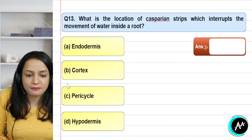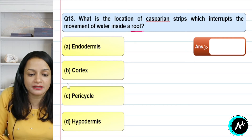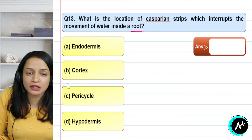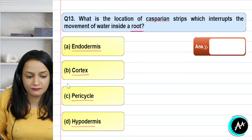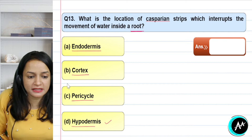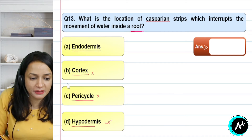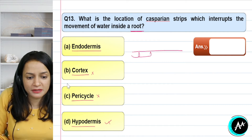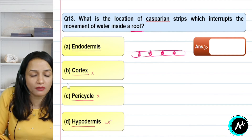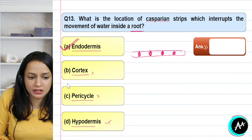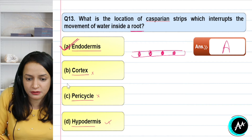Question 13: what is the location of the Casparian strip, which interrupts the movement of water inside a root? The root absorbs water and it travels through the root system, encountering Casparian strips that restrict water movement. The layers include endodermis, cortex, pericycle, and hypodermis. Hypodermis is the topmost layer, pericycle does not have Casparian strips, cortex does not either. The Casparian strips are found in the cells of the endodermis, restricting water movement inside the root. The correct answer is option A — endodermis.